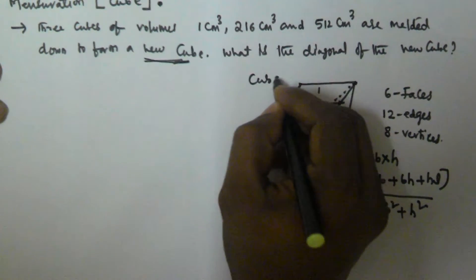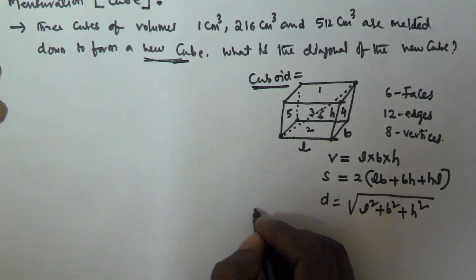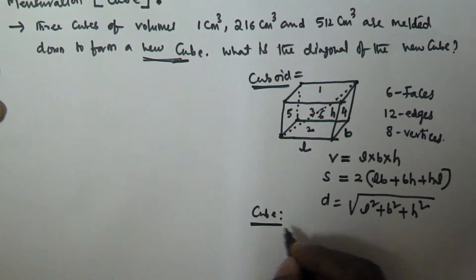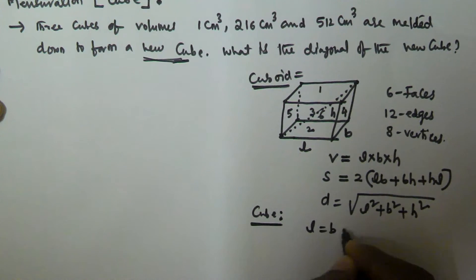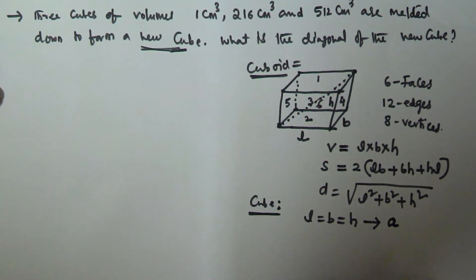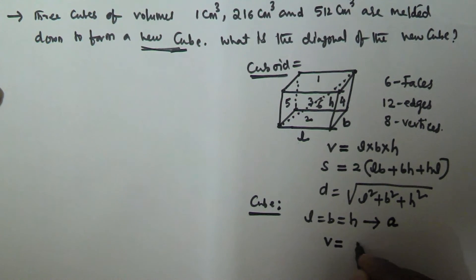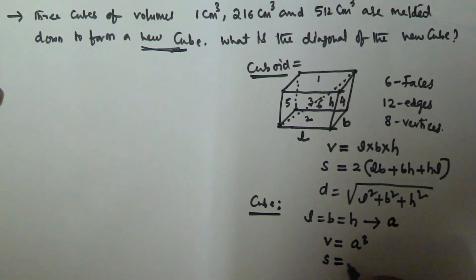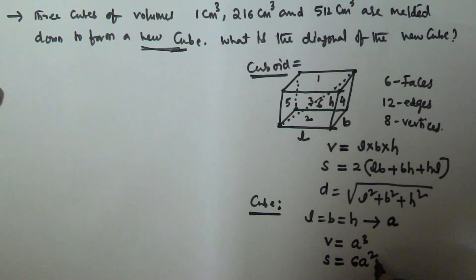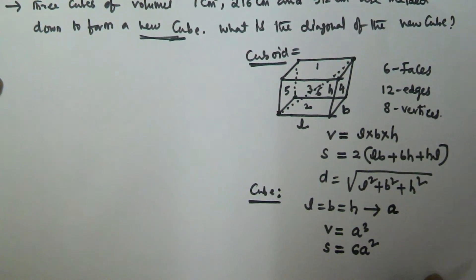Now we will come to the cube. If the length, breadth, and height are all equal to some value A — that is, length = breadth = height = A — then the cuboid is called a cube. In that case, the volume of the cube is A³ (A × A × A), and the surface area is 6A² (since each face has area A², and there are 6 faces: 3A² × 2).